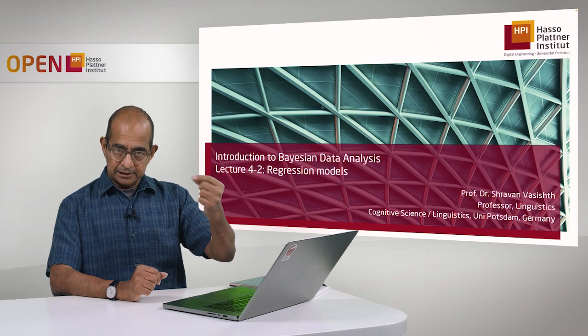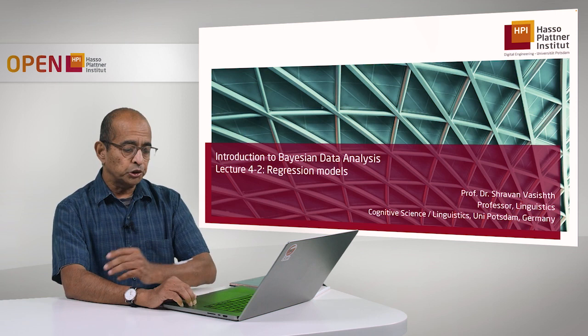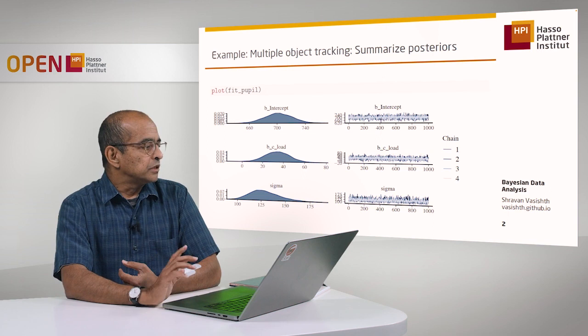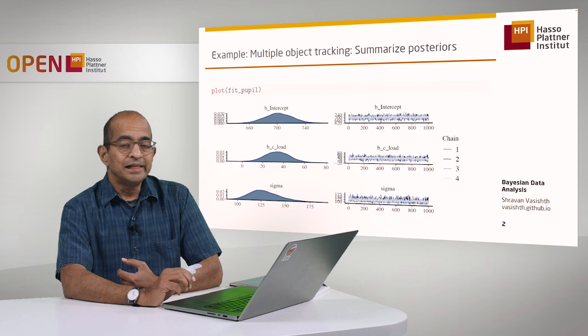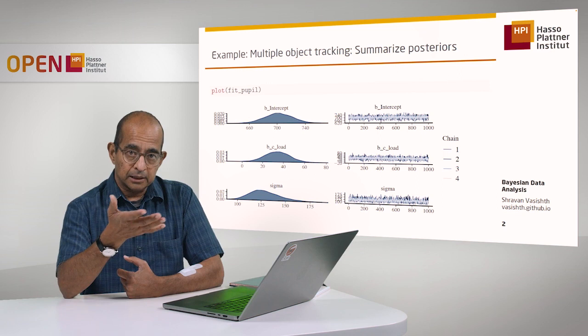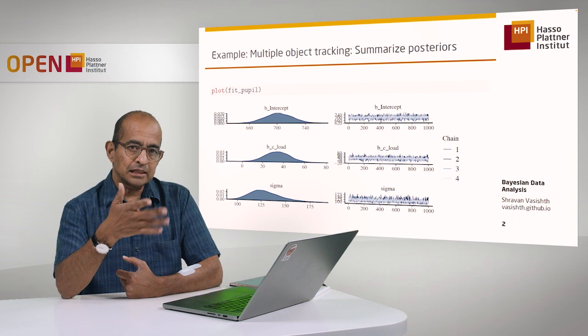I just showed you the code for the model. Now I'm going to show you what you get out of this model and how to interpret it. One easy way to summarize the output from the model is to use this built-in plot function. The plot function knows that you're looking at a Stan object — the fitted model is a Stan object underlyingly — and it uses that information to print out the appropriate plot.